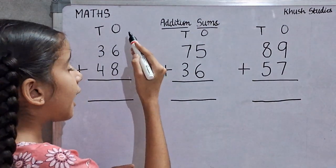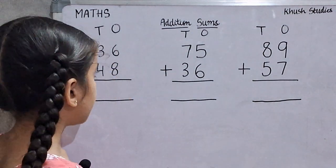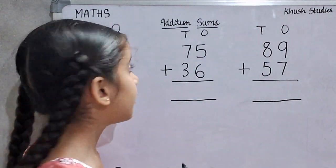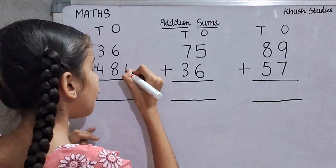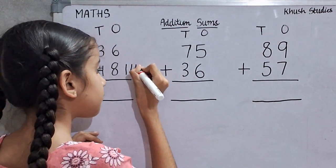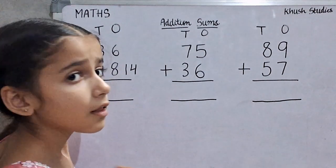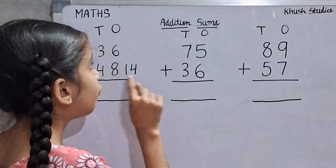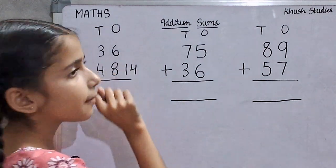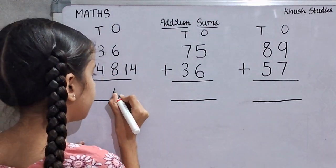First, we will add ones digit. 6 plus 8 is equal to 14. We will write here 14. We will write ones digit 4 in ones place.